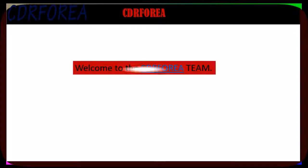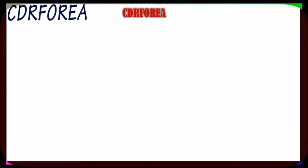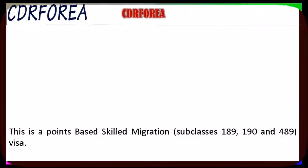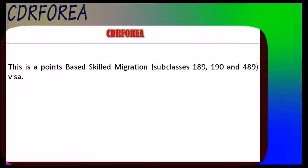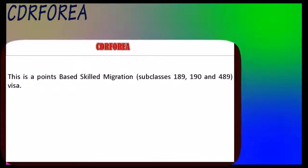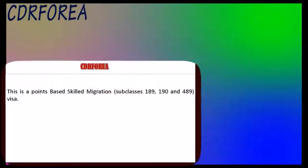Australia is a wonderful place to live and work, and offers much to migrants in every field. If you are interested, you can go to Australia with three easy steps. After watching this video, you will learn how to get a PR visa in Australia with three easy steps.